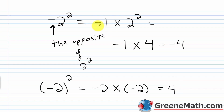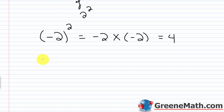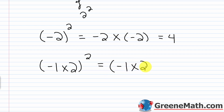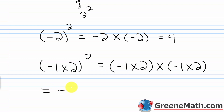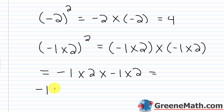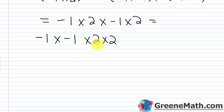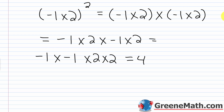You can also verify using the negative 1 trick: (-1 × 2)² expands to negative 1 times 2 multiplied by negative 1 times 2. Since it's all multiplication, we can reorder using the commutative property: negative 1 times negative 1 times 2 times 2. Negative 1 times negative 1 is positive 1, times 2 is 2, times 2 is 4. Our mistake was purely with the notation. Moving forward, if you want to raise a negative number to a power, enclose it inside parentheses.